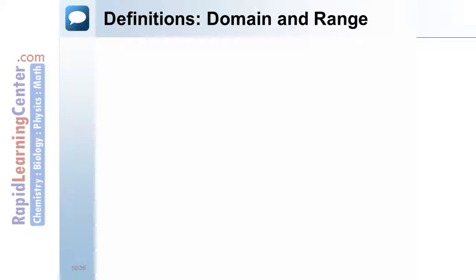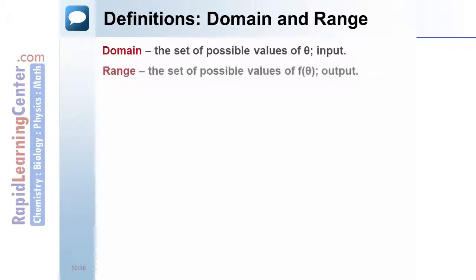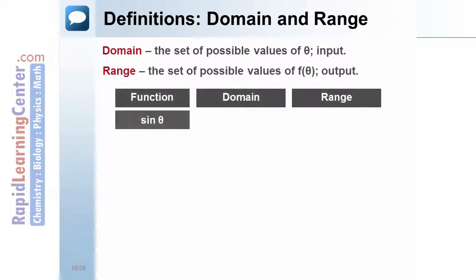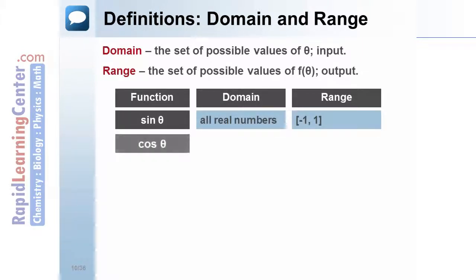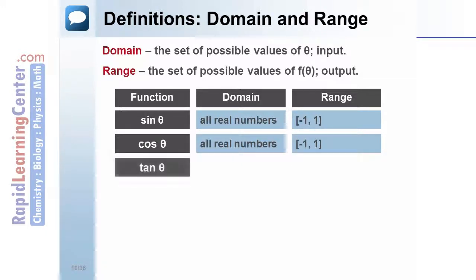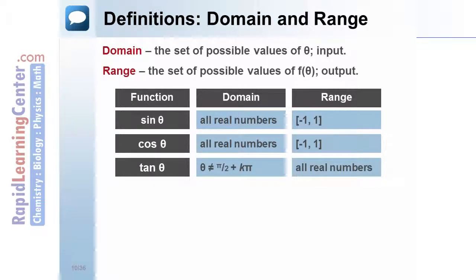Definitions — Domain and Range: The domain is the set of all possible values of theta, also known as the input. The range is the set of all possible values of f(theta), also known as the output. The domain of sine of theta is all real numbers, and the range is negative 1 to 1. The domain of cosine of theta is all real numbers, and the range is negative 1 to 1. The domain of tangent of theta is all values not equal to pi over 2 plus k times pi, and the range is all real numbers.